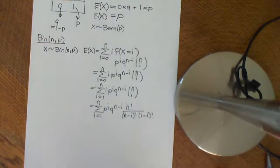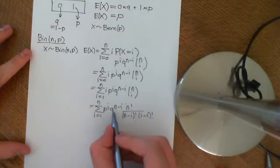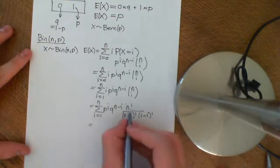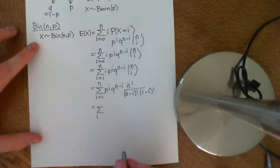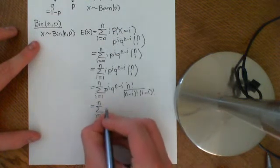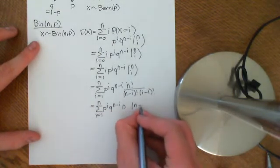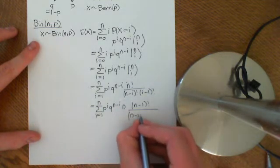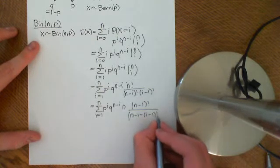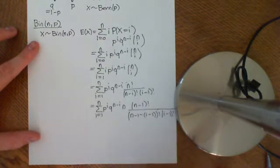What we'd quite like to do is pull out an n here. The reason being that if we pull out an n from this n factorial, what we get is the sum from i is equal to 1 to n, p to the i, q to the n minus i, and then we get n, and then n minus 1 factorial. We could rewrite n minus i as n minus 1 minus i minus 1 factorial over i minus 1 factorial.